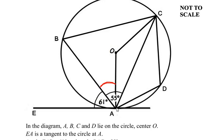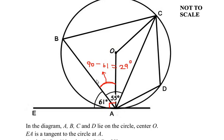Here we can see that OA is a radius and EA is a tangent. The radius-tangent theorem states that the radius always makes a 90 degree angle with the tangent, so angle EAO is completely 90 degrees. Out of that 90 degrees, 61 degrees is taken by angle EAB, so the remaining angle BAO is 90 minus 61, which equals 29 degrees. So angle BAO is 29 degrees by using the radius-tangent theorem.